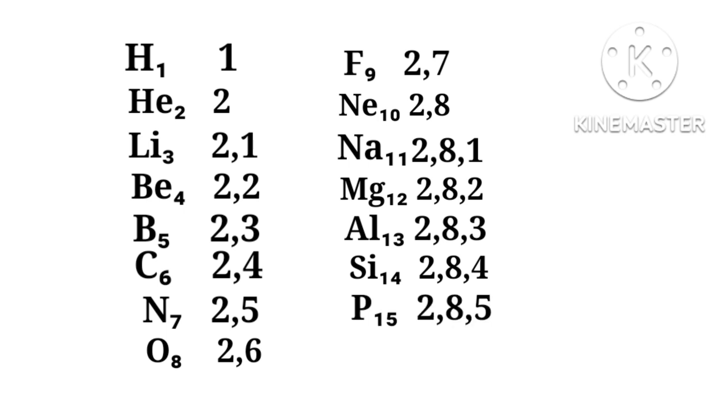Phosphorus 2,8,5. Sulfur 2,8,6. Chlorine 2,8,7. Argon 2,8,8. Now there cannot be more than 8 electrons in the outermost orbit.